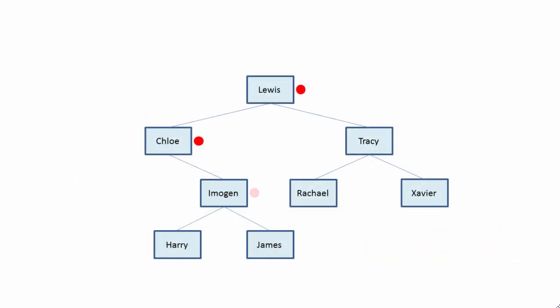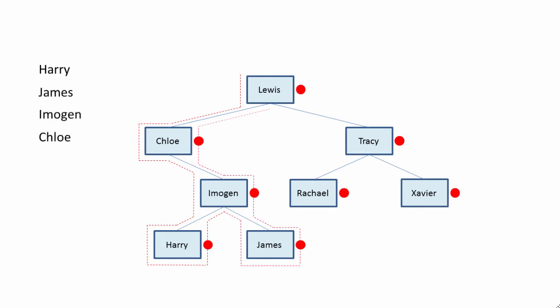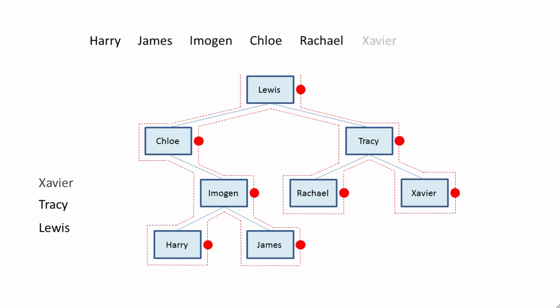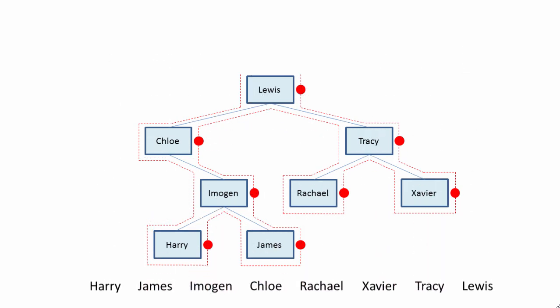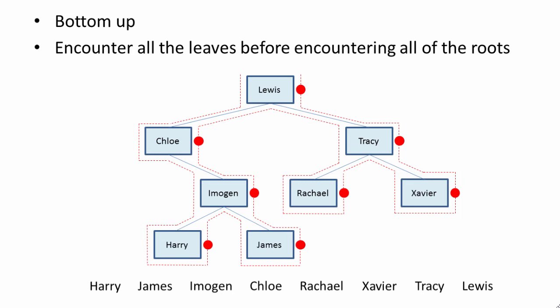So how does post-order traversal look with real data? This time we place a marker to the right of each node. Starting on the left, we follow the path given by these markers. The first piece of data we encounter is Harry, then James, then Imogen, then Chloe. Notice how we're visiting the leaf nodes before we cover all of the root nodes. This is a bottom-up form of traversal — we encounter all of the leaves before we encounter all of the roots.